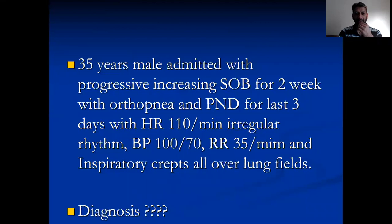Irregularly irregular rhythm, blood pressure 100 by 70, respiratory rate 35 per minute, and inspiratory creps all over the lung field — the diagnosis.